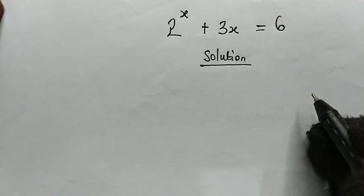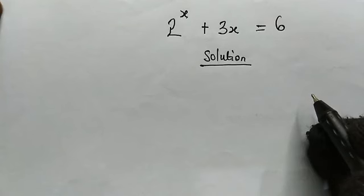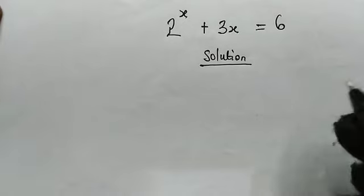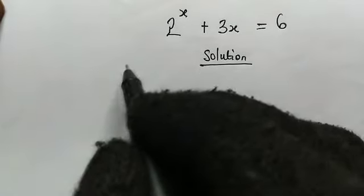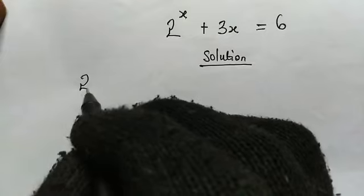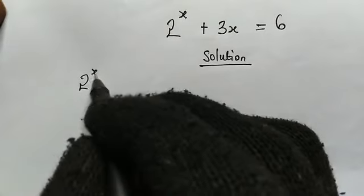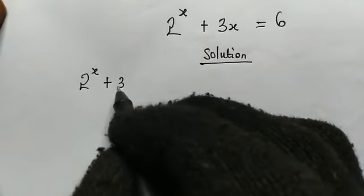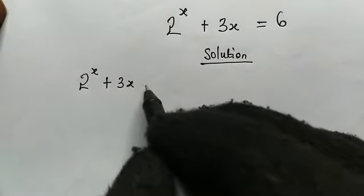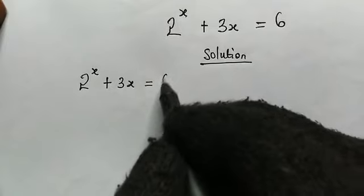This equation is indeed a transcendental equation. In today's video, let us lambatize this serious issue, just like I said earlier. And here we're going to start: from the left we have 2 to the power of x plus 3x, and this equals 6.